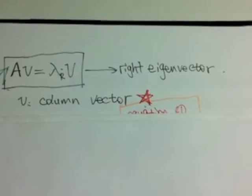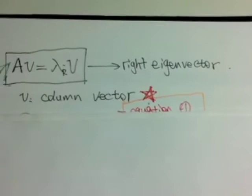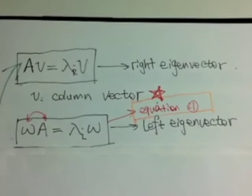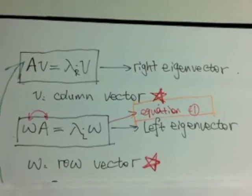One thing worth mentioning is that the right eigenvectors are column vectors. If we switch the position of eigenvector and A, we got the definition of left eigenvector. Actually, all of the left eigenvectors, they are row vectors.